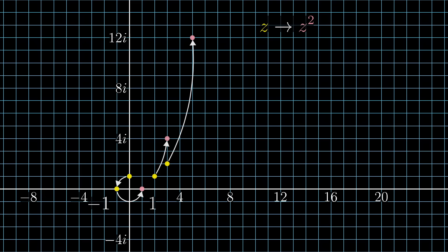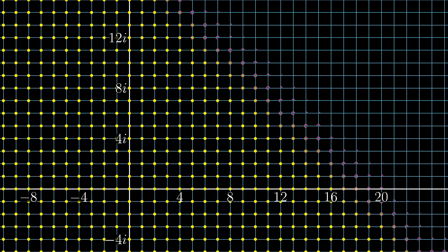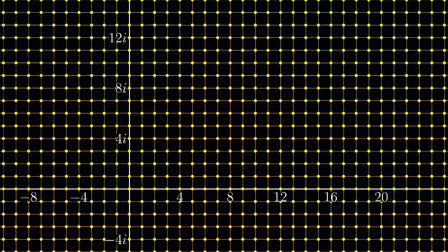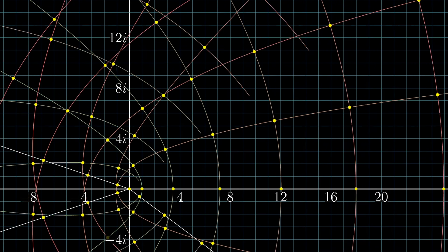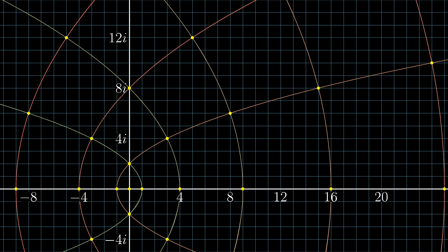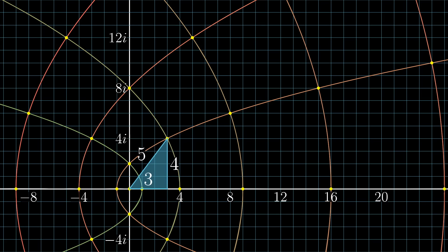Now when you do this to every single point on the plane, including the grid lines, which I'll make more colorful so they're easier to follow, here's what it looks like. So the grid lines all get turned into these parabolic arcs, and every point where these arcs intersect is a place where a lattice point landed, so it corresponds to some Pythagorean triple.